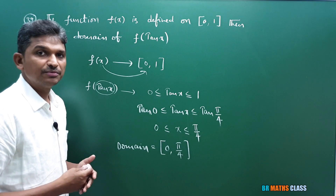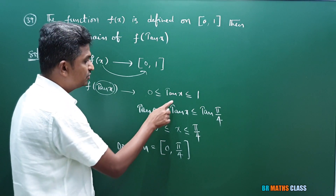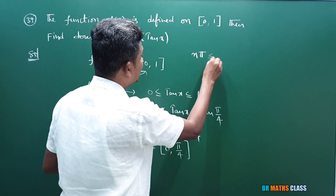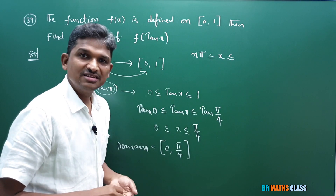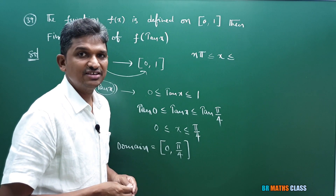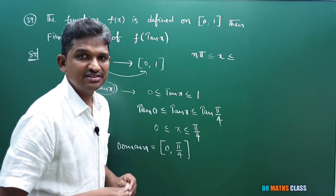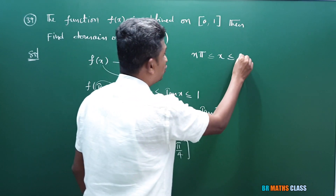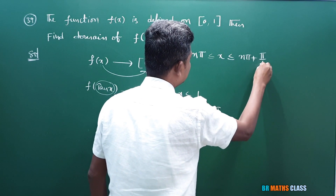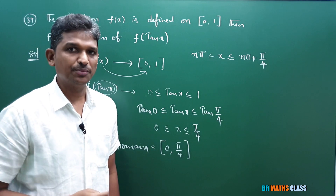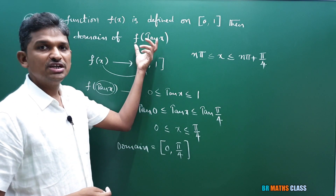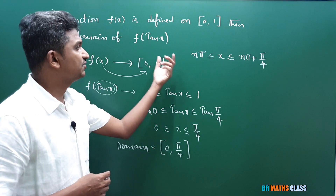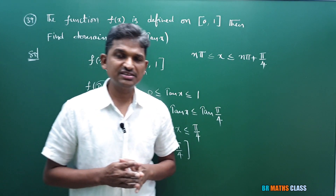This is the interval in the first quadrant. If they ask for the general form: when tan x = 0, x = nπ, and when tan x = 1, using the general solution tan θ = k gives x = nπ + π/4. So in general form, the domain is nπ ≤ x ≤ nπ + π/4. If they ask for the domain in the first quadrant, we write the closed interval [0, π/4]. If they ask in general form, this is the domain.